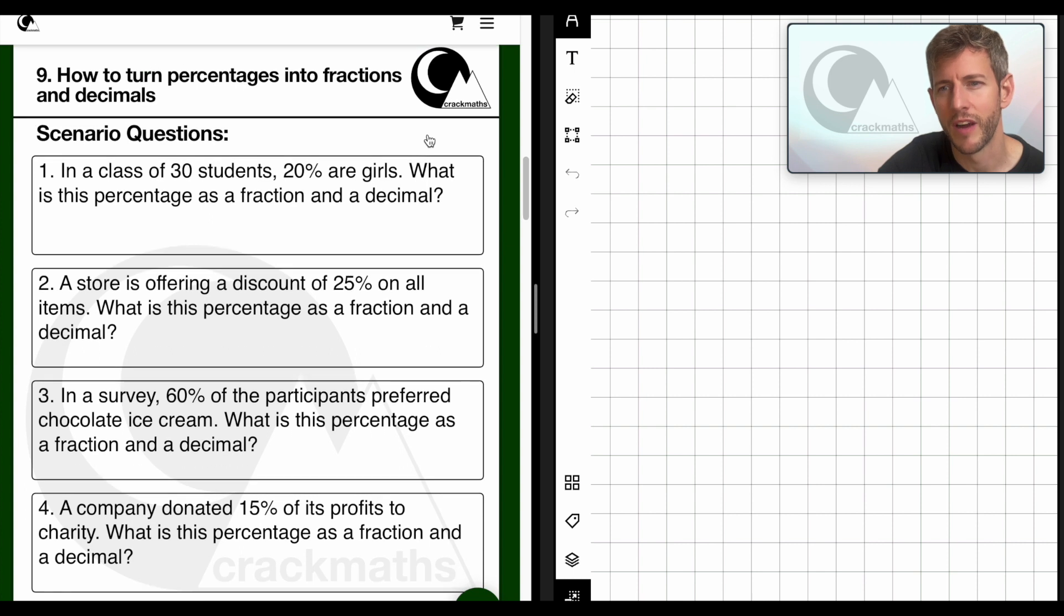And then here, let's have a look at the scenario questions. Right. So, question one. In a class of 30 students, 20% are girls. What is this percentage as a fraction and a decimal? Okay. So it's important when you read these questions to see what information is relevant and what information is just there. In this situation, it's nice to know that there's 30 students, but the question hasn't actually asked for any information about these 30 students. What is actually asked for? It's asked for 20% as a fraction and a decimal.